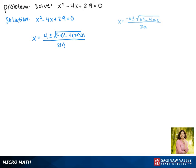Now working this out under the square root we get x equals 4 plus or minus the square root of 16 minus 116, all divided by 2.